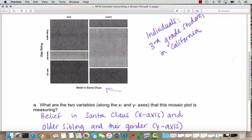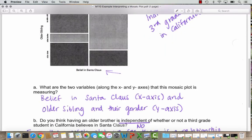I'm not sure what they did for students who have both older brothers and older sisters. We'd have to track down the researchers and ask them. So I put a note here, belief in Santa Claus is measured on the x-axis and older sibling and their gender are measured on the y-axis.